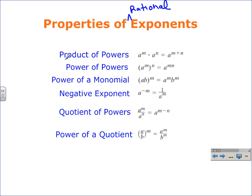We have six rules to remember. The product of powers: when multiplying two powers of like bases, we add the powers. The power of a power: when raising a power to another power, we multiply those powers. The power of a monomial is like the distributive property of powers, where every part of the monomial inside the parentheses needs to be raised to that power. Negative exponents: to express a to the negative m as a positive power, we put it under one. The quotient of powers: dividing two like bases means we subtract their exponents. The quotient of a power says a rational number raised to a power equals both the numerator and denominator raised to the power separately.